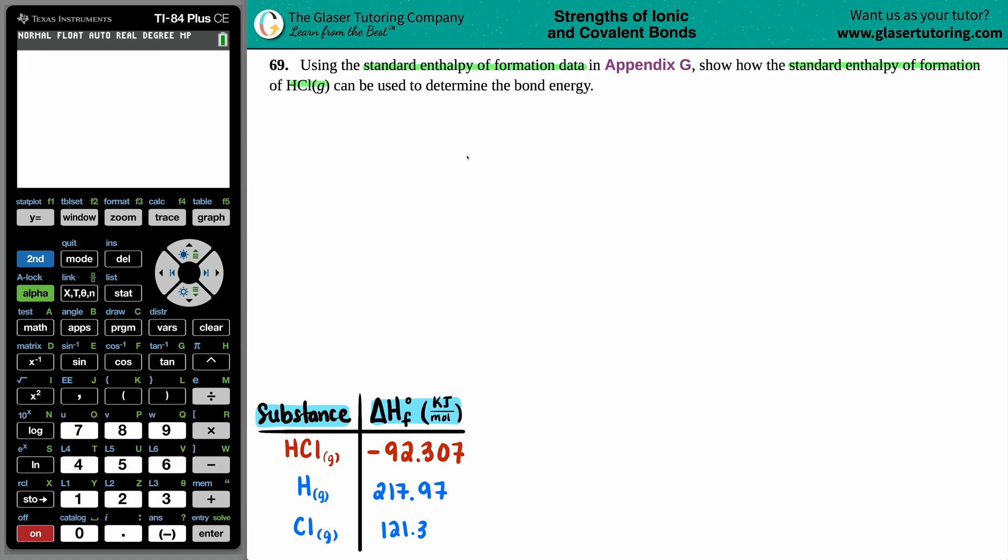So first things first, we have to use Appendix G to get standard enthalpy values, but in this case we have to take those enthalpy values and determine a bond energy. Whenever we're dealing with bond energies, we should write out the appropriate balanced equation. When you're dealing with bond energies, just know that you're always going to be breaking the compound. So if you want to find out the bond energy in a certain compound, you have to break that bond.